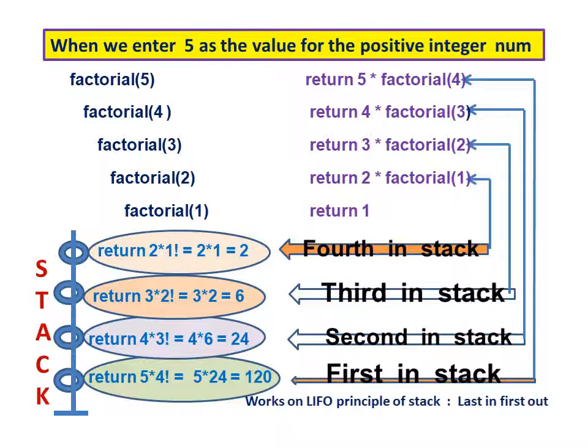Factorial(3) will return 3 multiplied by factorial(2). Before the multiplication is performed, there is a call for factorial(2), so the job is placed third in the stack. Factorial(2) will return 2 multiplied by factorial(1). Before the multiplication is performed, there is a call for factorial(1), so the job is placed fourth in the stack.